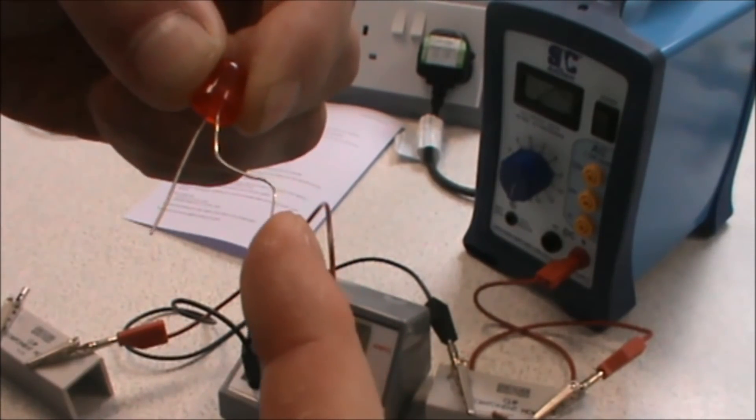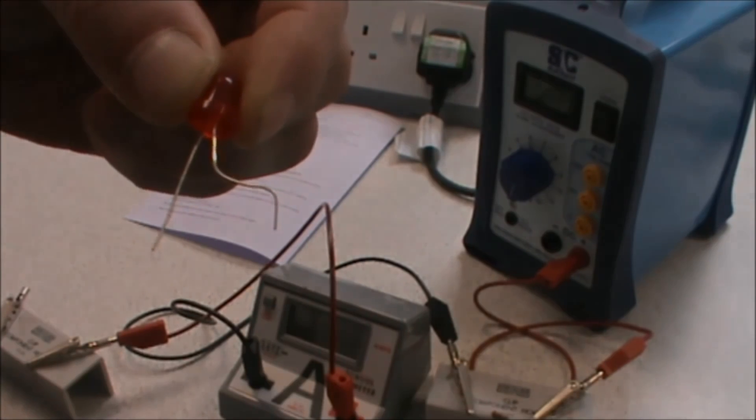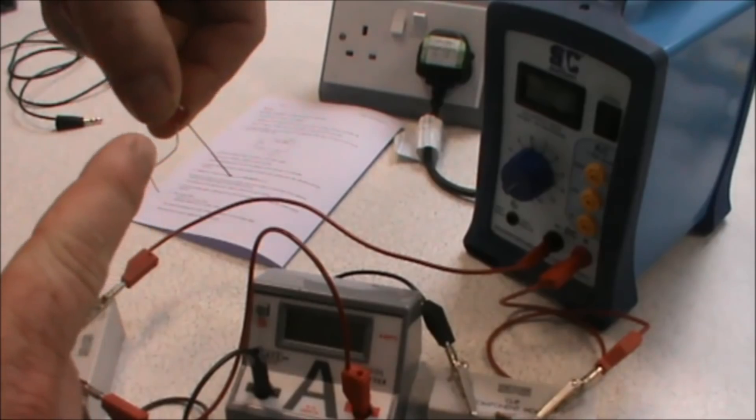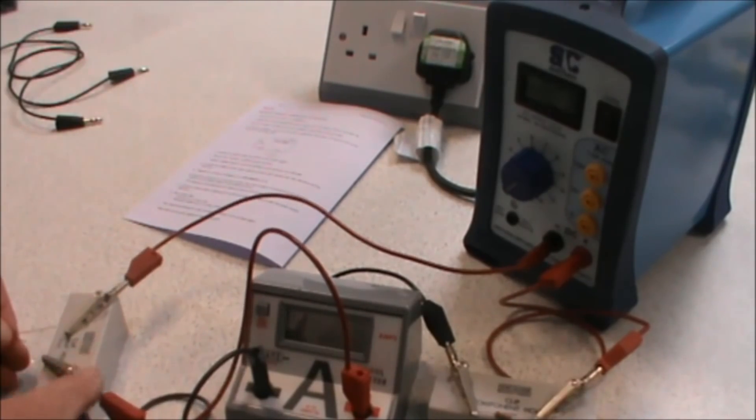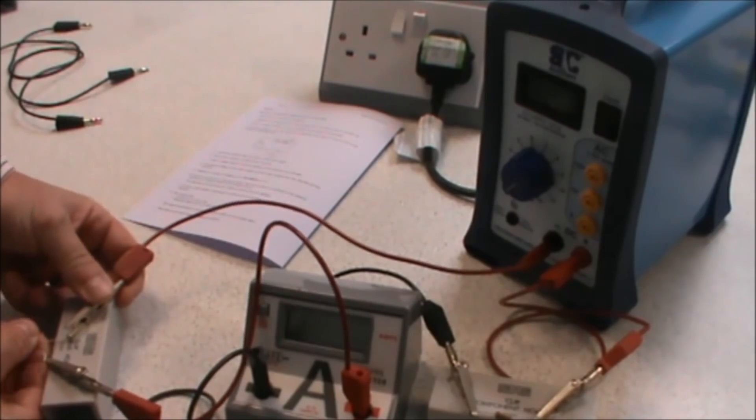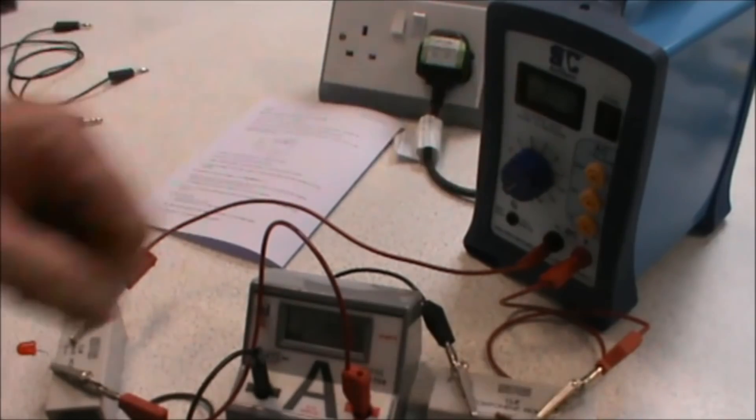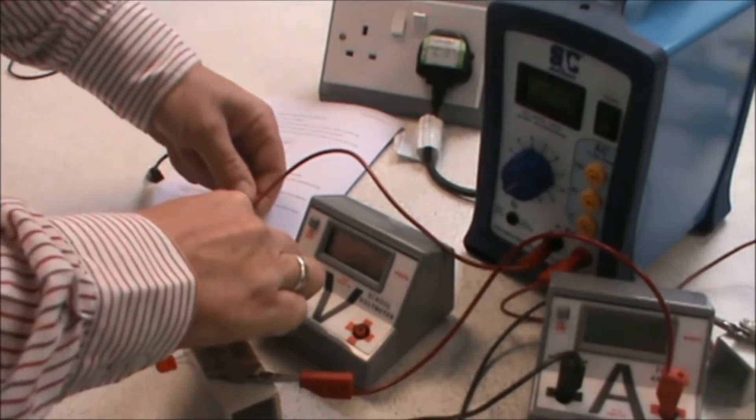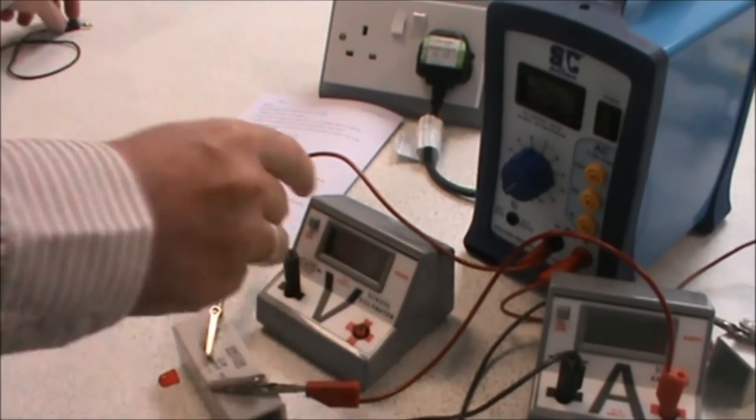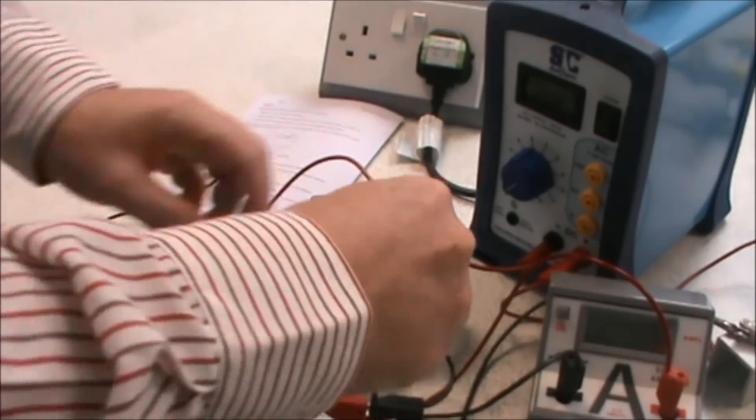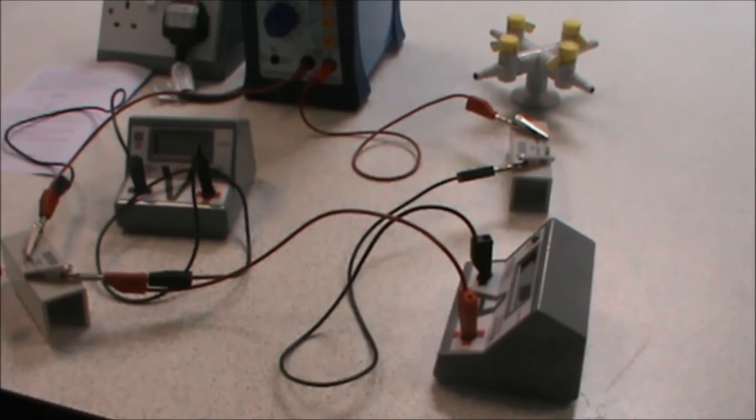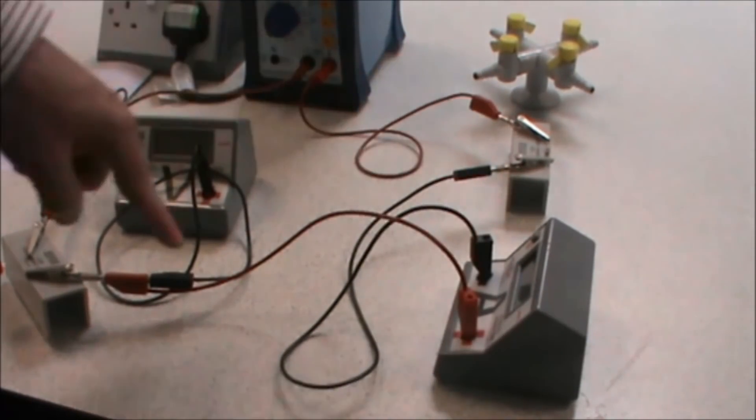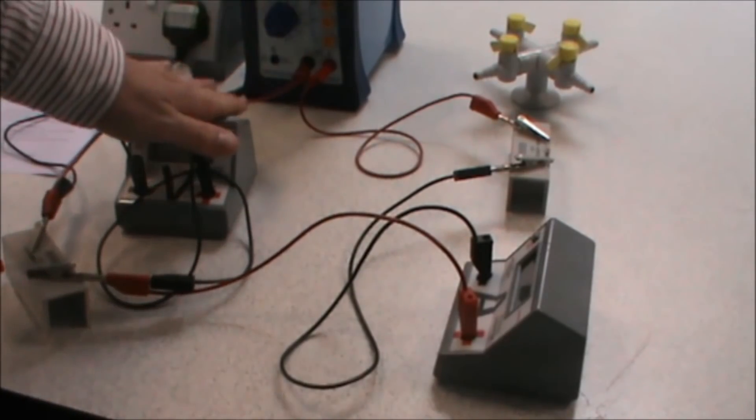We connect our LED into our component holder, making sure that the long leg that we have just bent is connected on the positive side of our circuit, and then we connect back up to our power supply. We now want to connect our voltmeter in parallel, and there we have our completed circuit from our power supply through to the resistor, through our ammeter, through our LED back to the power supply, and the voltmeter in parallel.